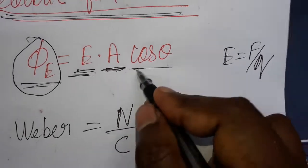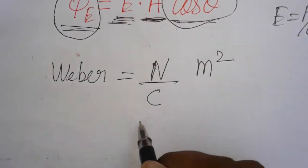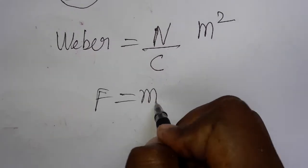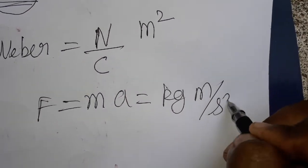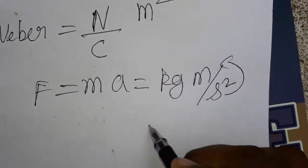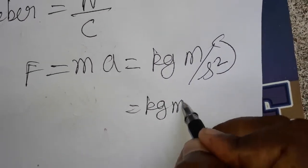Cos theta doesn't have any unit. Newton is a force. Force is equal to mass into acceleration, it is kg meter by second square. So we can take Newton as kg meter second minus 2.